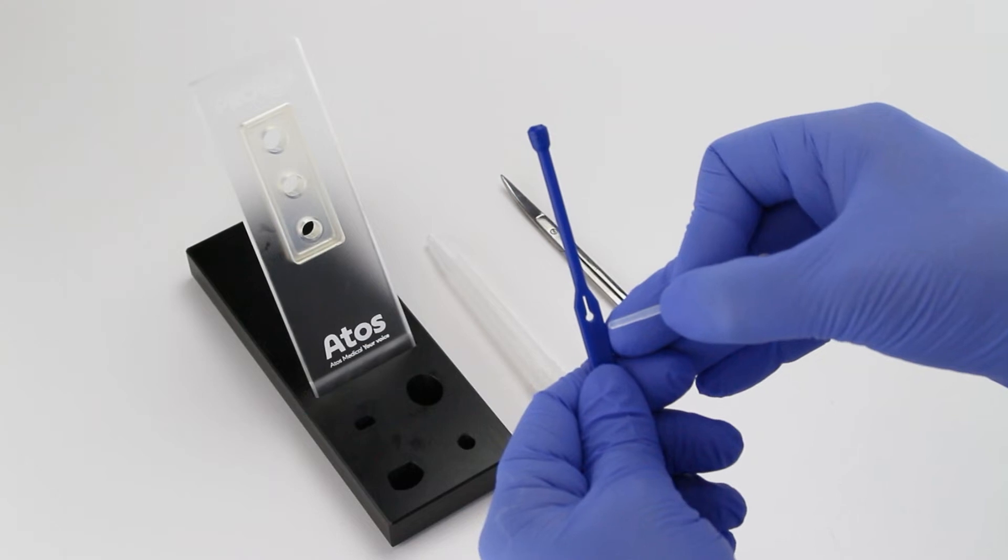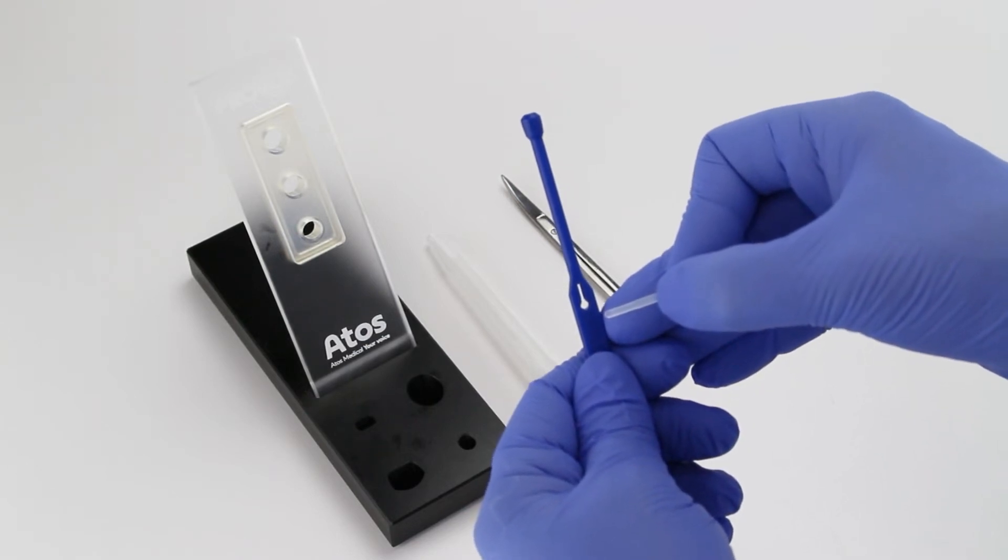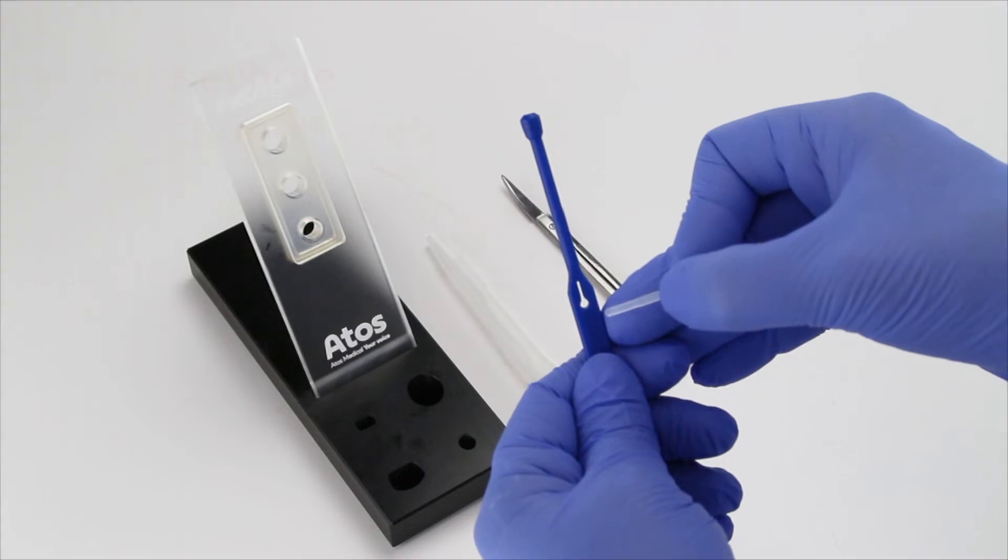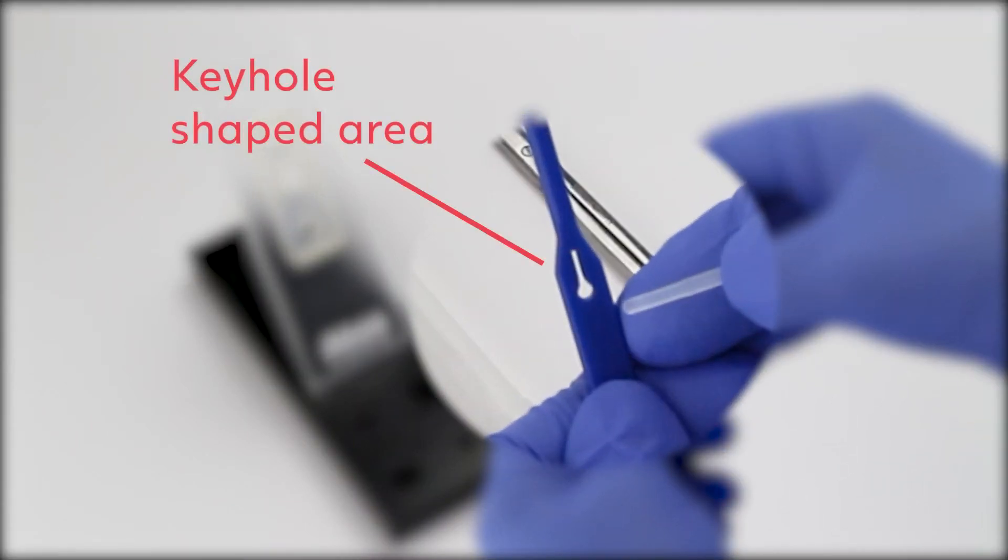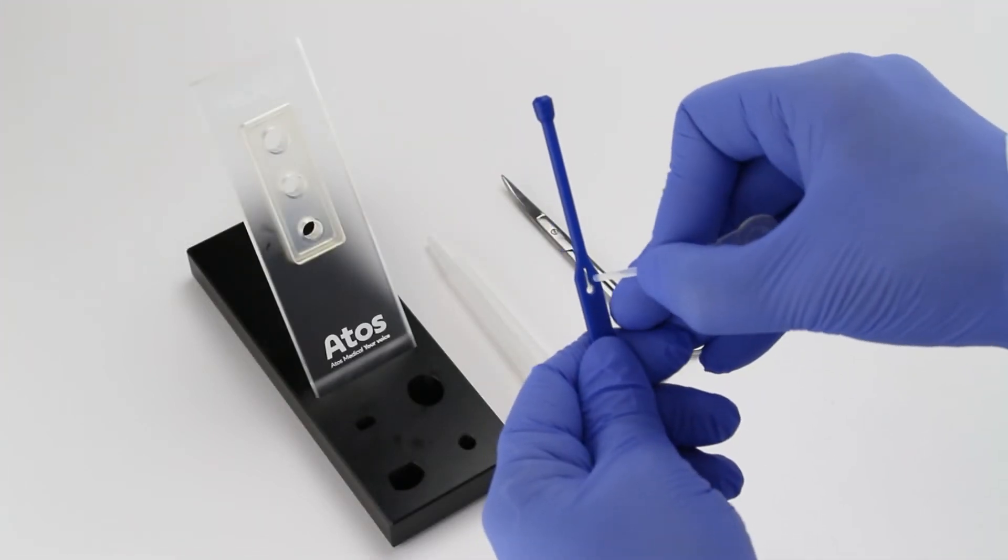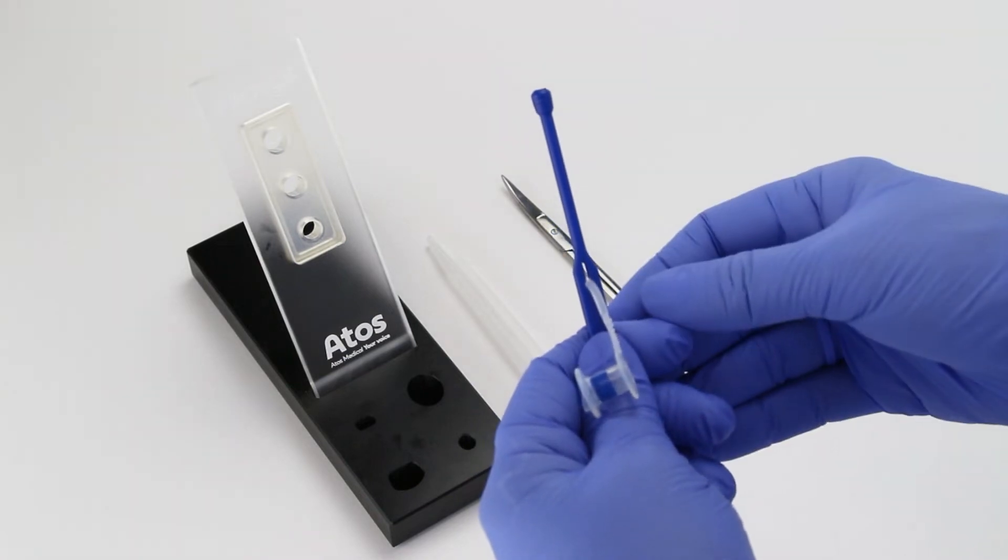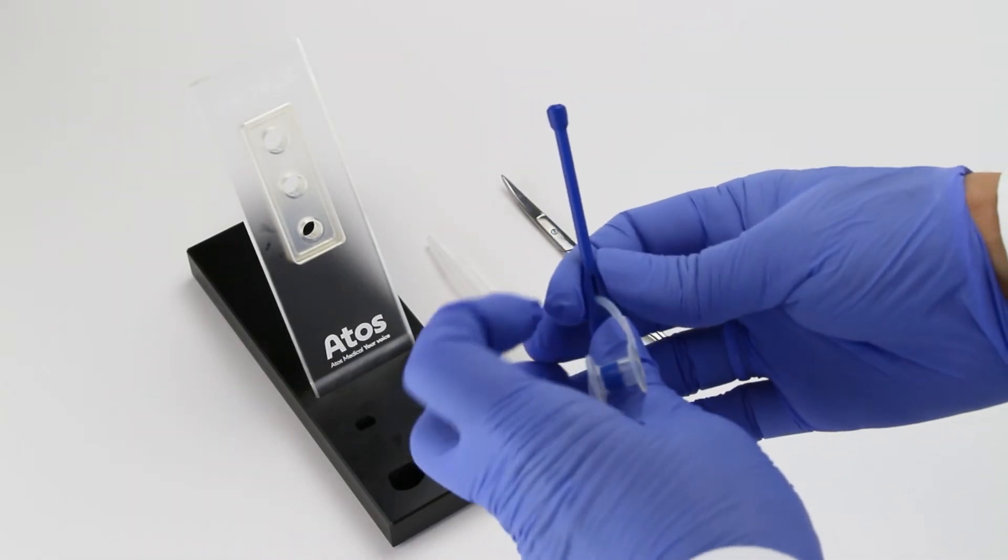Provox Active Valve is placed in the same manner as the Provox 2 voice prosthesis. Thread the safety strap of the Active Valve into the keyhole-shaped area of the inserter pin. Pull it into the narrower part of the slit to lock into place.